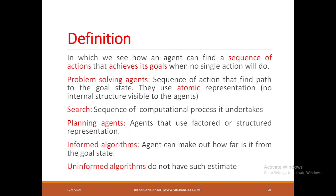A problem cannot be solved by executing only one action; you have to execute multiple sequences of actions to reach a goal state or solve that problem. Based on this, let us define what is a problem-solving agent. It is an agent that finds a sequence of actions to find a path to reach a goal state. It uses no information about the environment — the environment will be a black box — and it formulates how to solve that problem. Searching is a sequence of computational processes undertaken by an agent to reach a goal state.